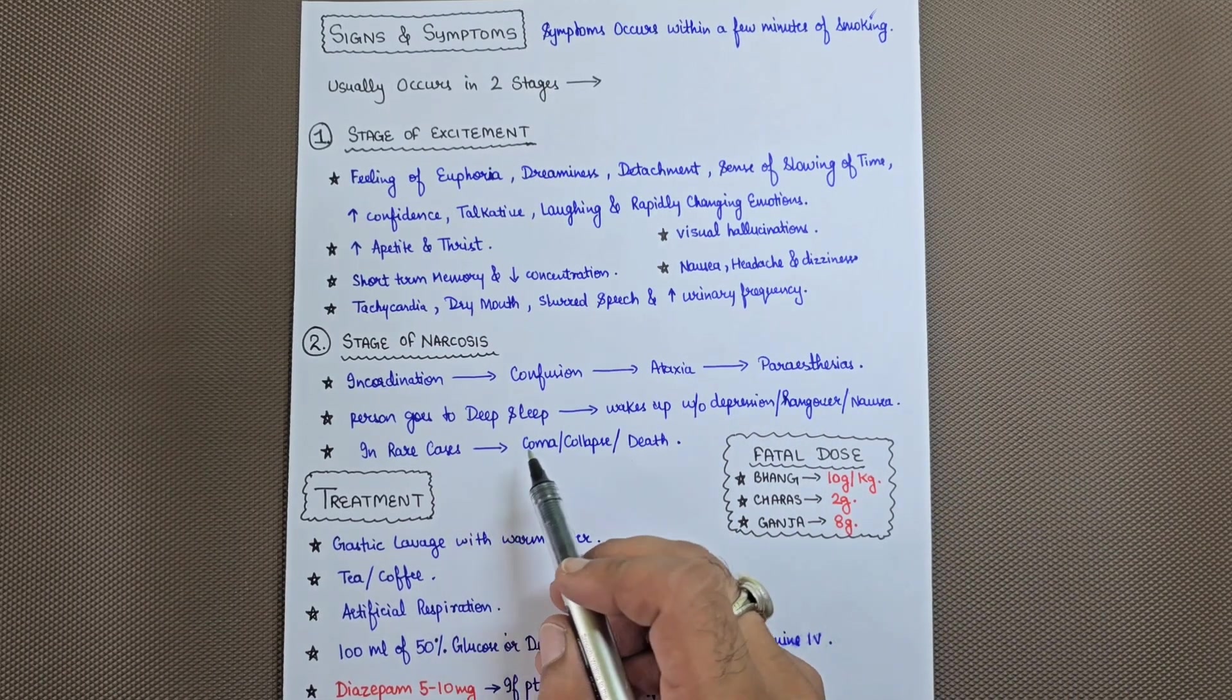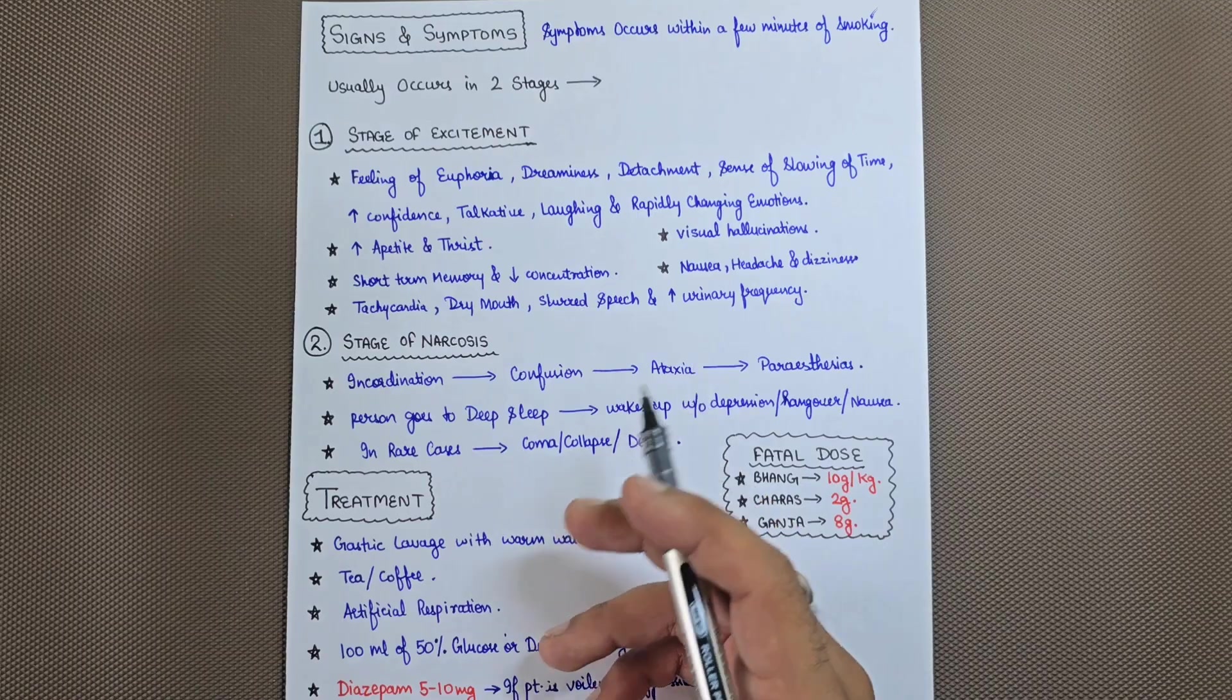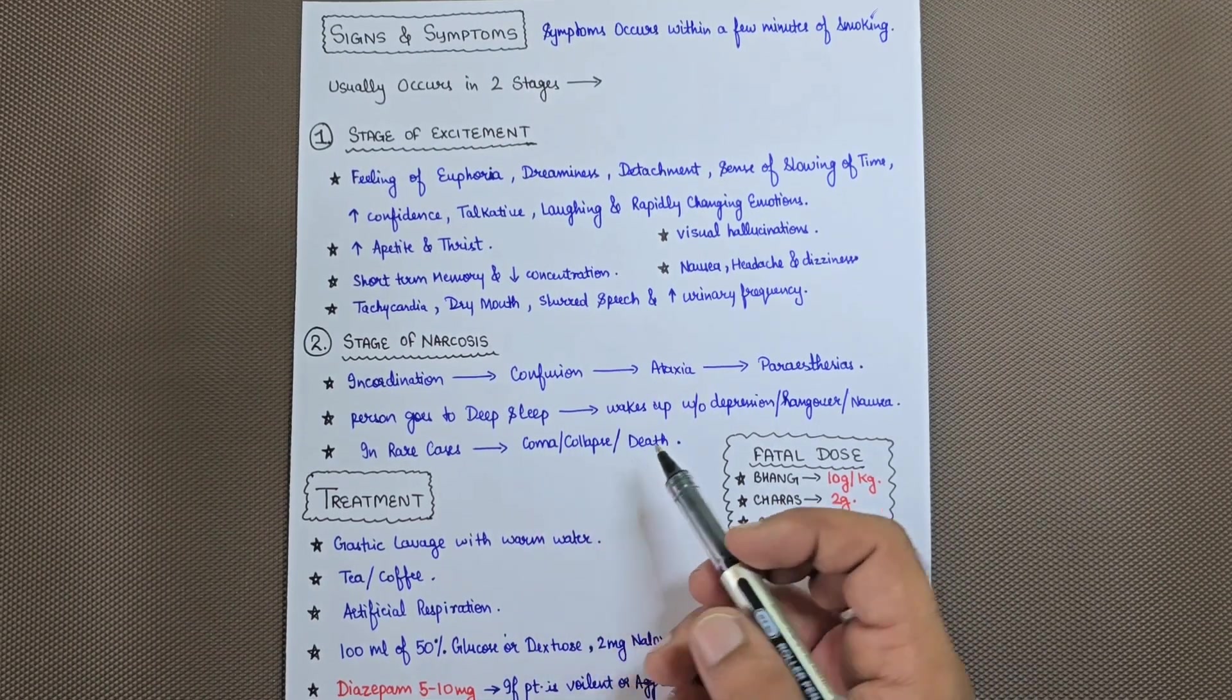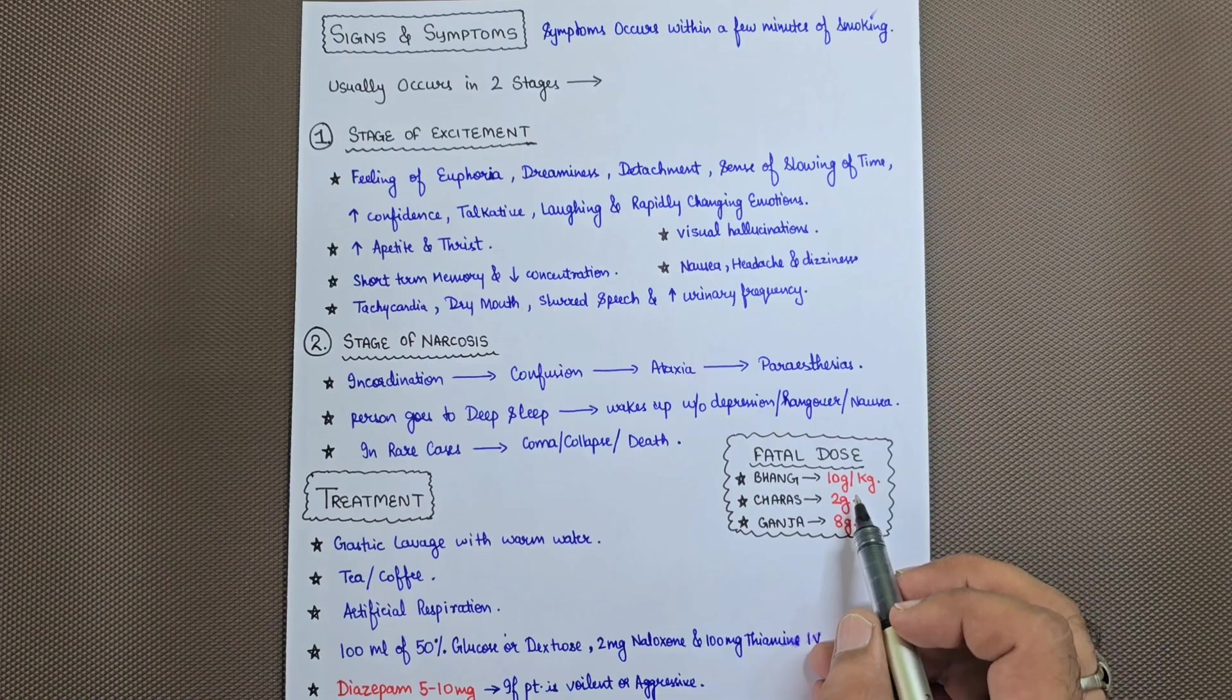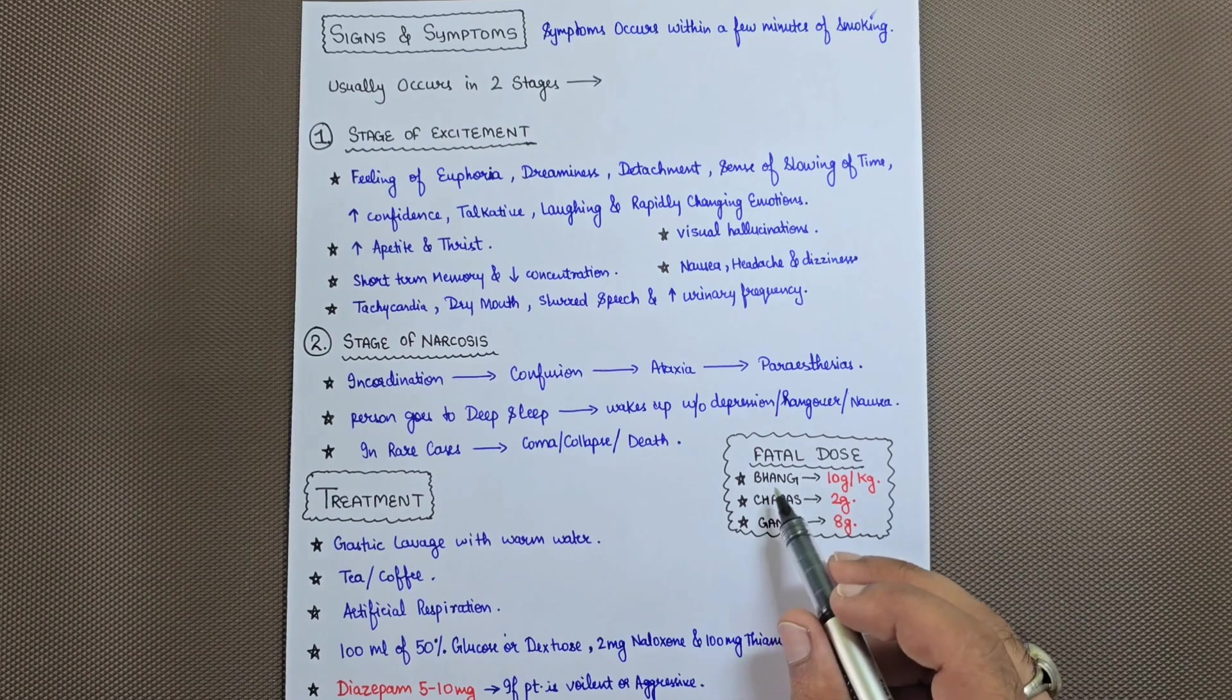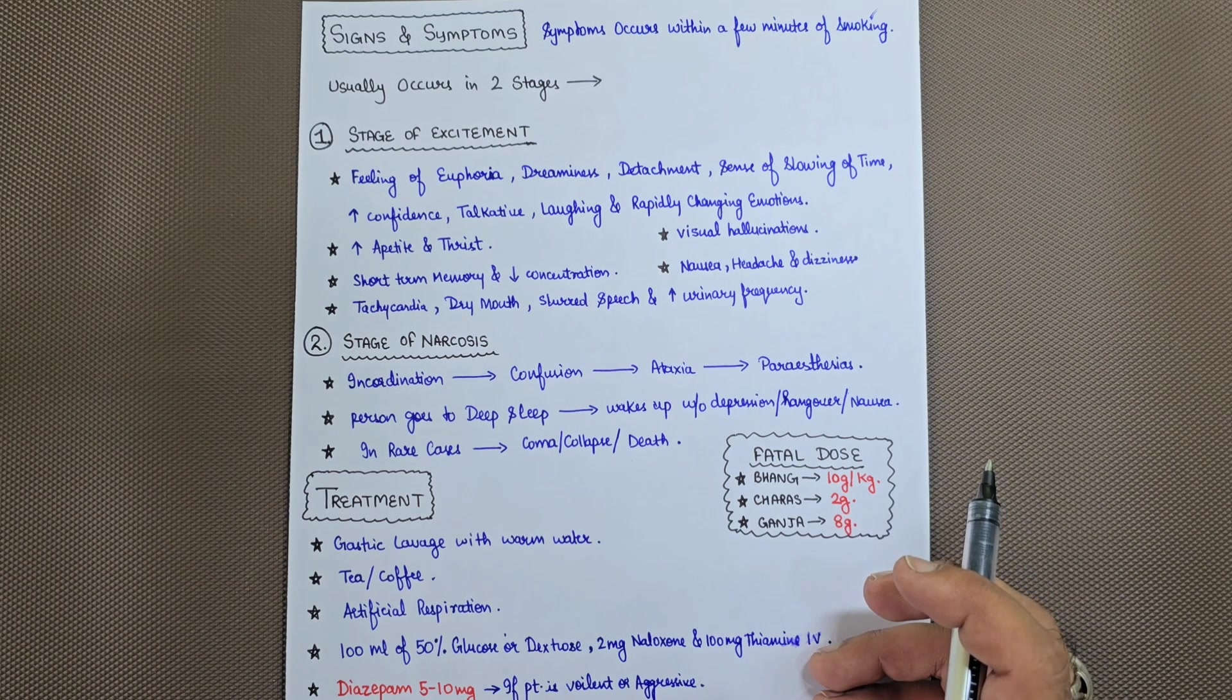In rare cases, when patients consume very high amounts of cannabis preparations like charas, bhang, or ganja, it can lead to coma, collapse, and death. The fatal dose for bhang is 10 grams per kg body weight, charas is 2 grams, and ganja is 8 grams. The most potent being charas, which is highly toxic when consumed in very high amounts.